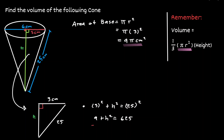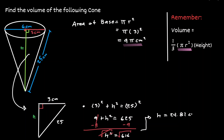Let's take away nine. So the height squared is equal to 616. To solve for the height, let's take the square root, and we approximate the square root of 616 to be 24.81 centimeters. So now we have an approximation for the height of this cone.